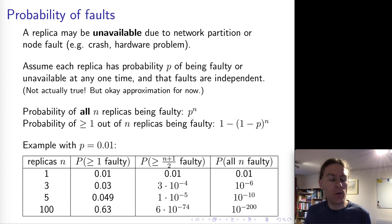What this table shows here is if you look at the column for at least one node being faulty, as you increase the number of replicas, it becomes almost certain that at least one of them is faulty at any given time. So in that sense, as you add replicas, the system becomes less reliable. Because given anyone has a chance of failing, as you have loads of replicas, there'll always be one that is failed at any moment.